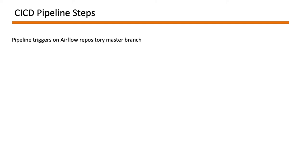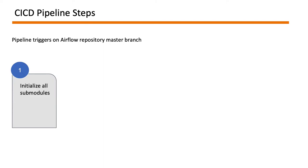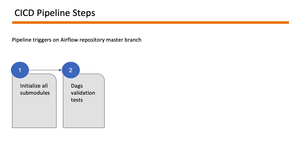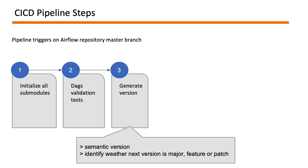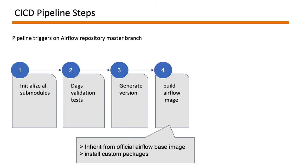Now let's go through the steps in our CI/CD pipeline. Whenever there is a merge into the master branch of the Airflow repository, the pipeline triggers. The first step initializes all submodules, fetching the DAG states referenced in the current master branch. Next is a DAG validation test — checking that all DAG code syntax is correct and all DAGs are loadable in Airflow without errors. Note that unit tests run in their own DAG repositories; here we only validate DAG loadability. Then we generate the version based on semantic versioning: a patch if an existing DAG is updated, a minor/feature release if a new DAG is added, and a major release if there's a breaking change like an Airflow version upgrade.